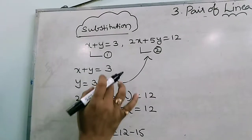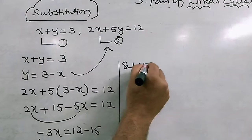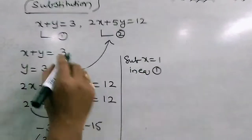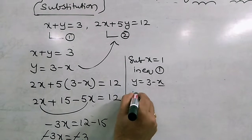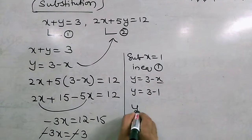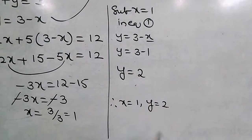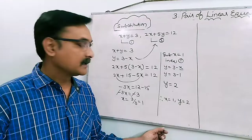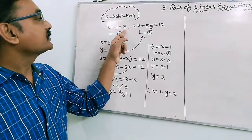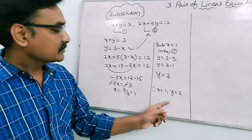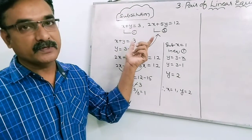Now, this x value we can substitute in any of the equations. Substituting x equals to 1 in equation 1: y equals to 3 minus x, replacing x with 1 gives 3 minus 1, so y equals to 2. Therefore x equals to 1 and y equals to 2. So x equals to 1 and y equals to 2 are the solutions of x plus y equals to 3 and 2x plus 5y equals to 12 — also called the zeros or solutions of the given pair of linear equations.